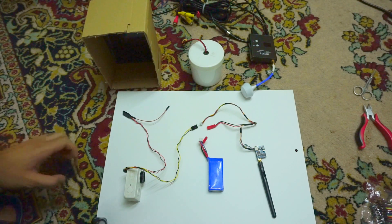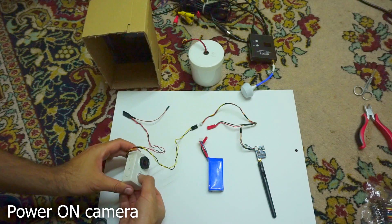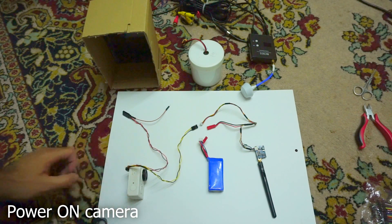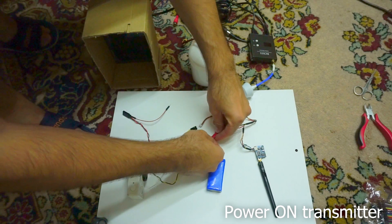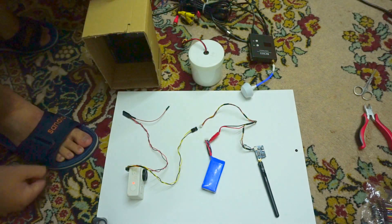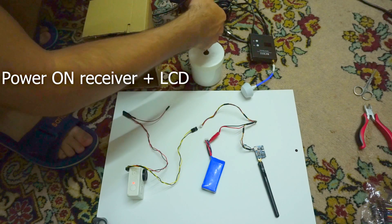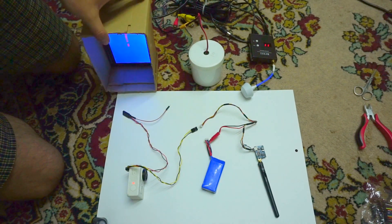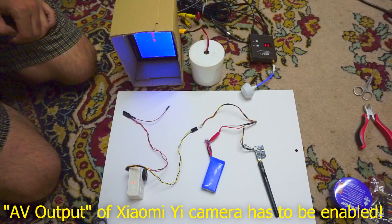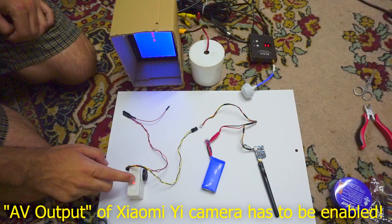Let's power on the Xiaomi camera, power on the transmitter, and power on the receiver part with the LCD. It won't transmit until you enable through a smartphone the AV out of the camera.